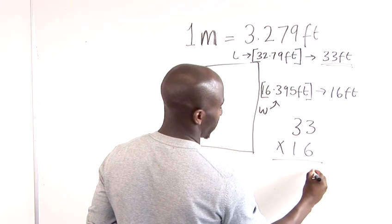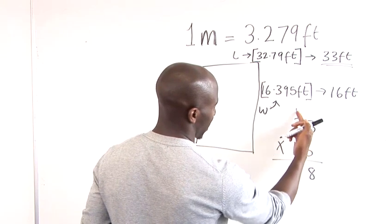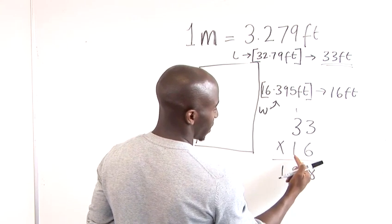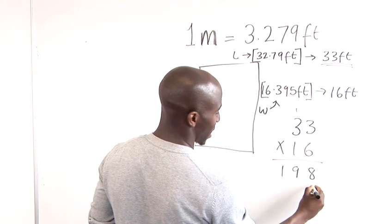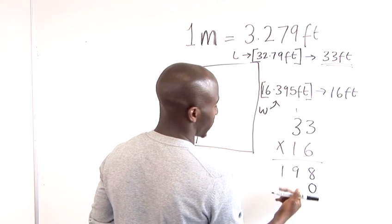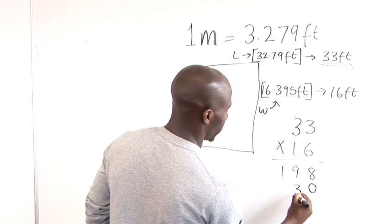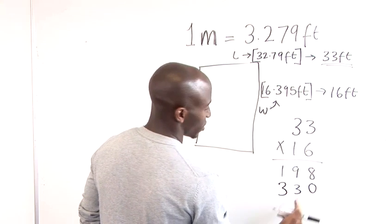So 6 times 3 is 18. The 1 up there, 6 times 3 is 18 and the 1 is 19. So you put 1 there and 1 there. Now because we're multiplying by this 1 which actually relates to 10, we shift all of our results of our multiplications to the left. So 1 times 3 is basically 3 and 1 times 3 again is just 3.